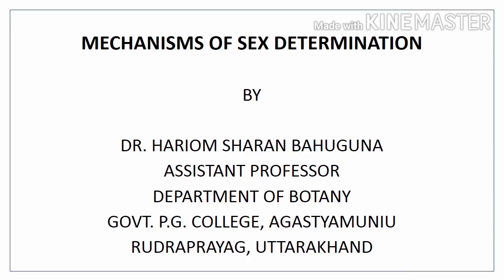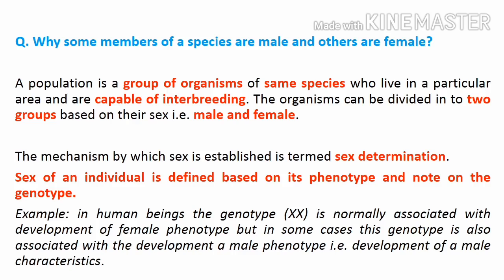We will learn what are the factors for sex determination in different species. As we know that some members of a species are male and others are female — a species is made up of organisms of both male and female. A population is a group of organisms of the same species.